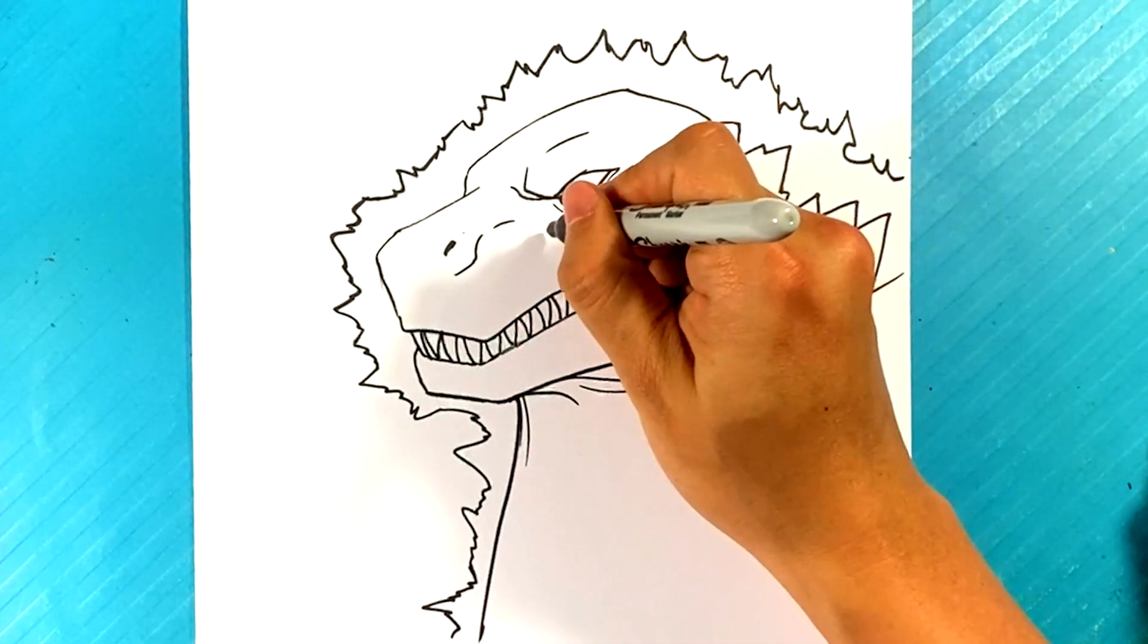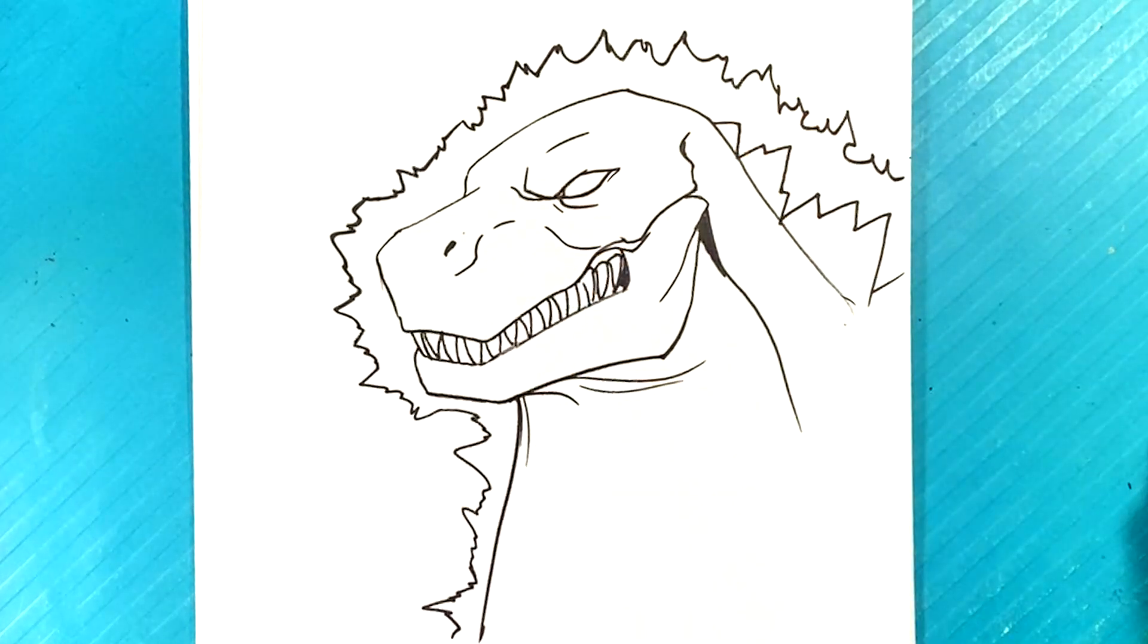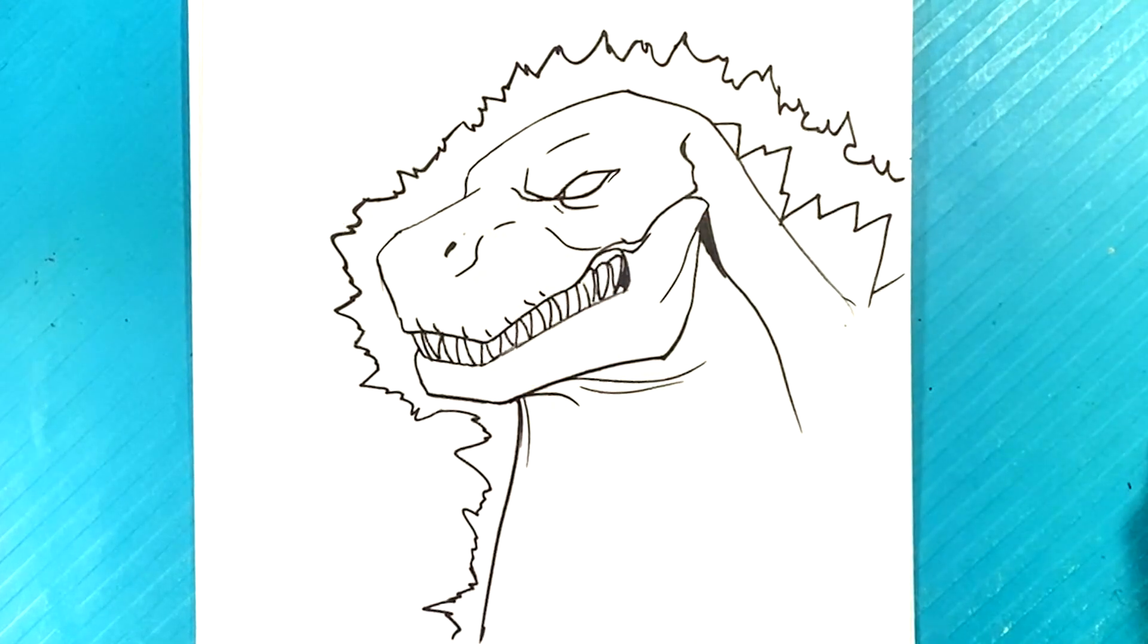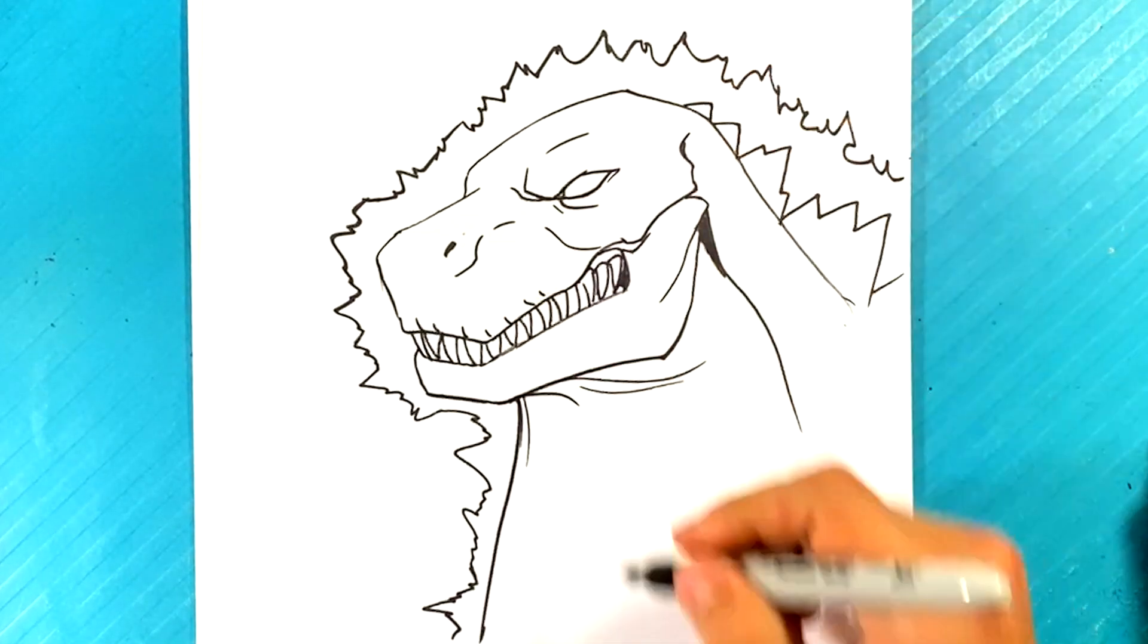A couple of little lines, and try to keep those a little bit thinner. Maybe right here as well, thinner, because these are detail-oriented lines. Let's put another spike right here. I think he needs it.